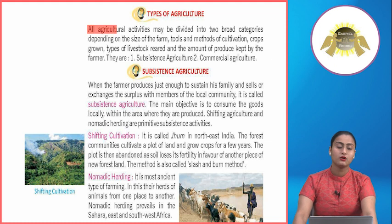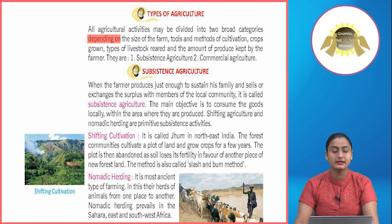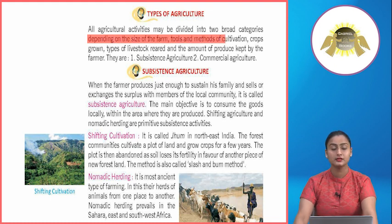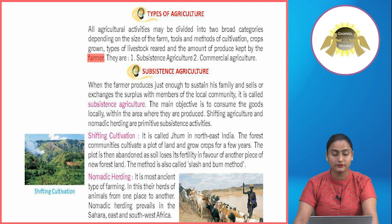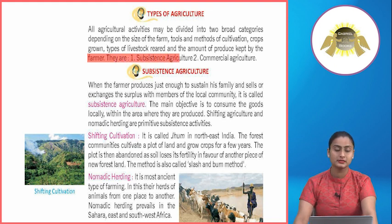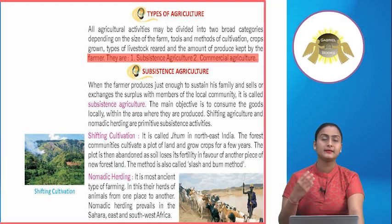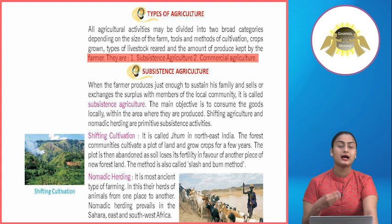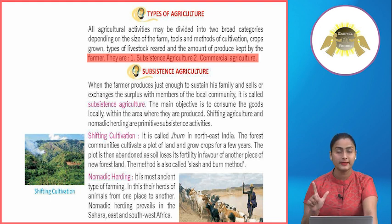Types of agriculture: All agricultural activities may be divided into two broad categories depending on the size of the farm, tools and methods of cultivation, crops grown, types of livestock reared, and the amount of produce kept by the farmer. These two types are: number one, subsistence agriculture, and number two, commercial agriculture.